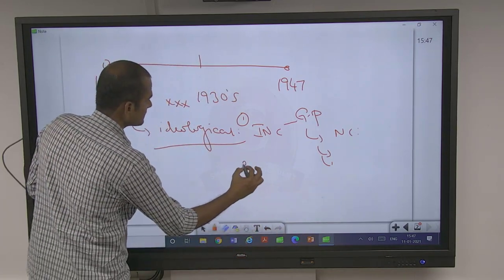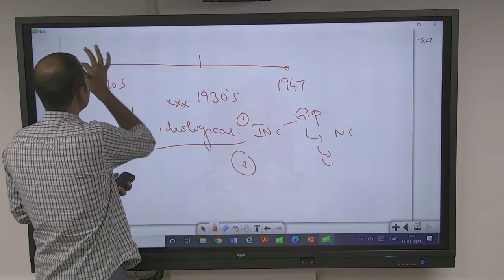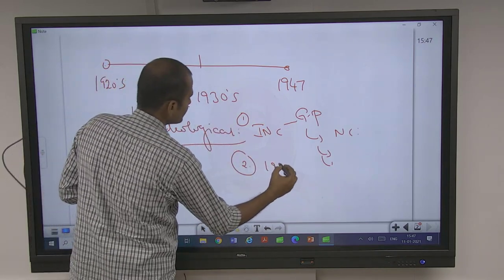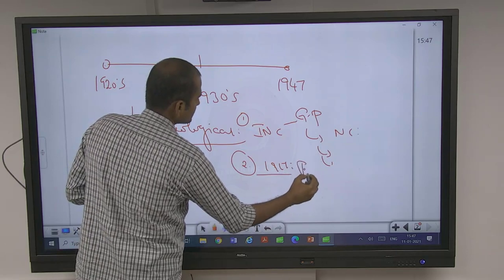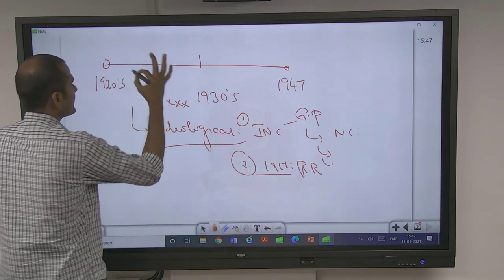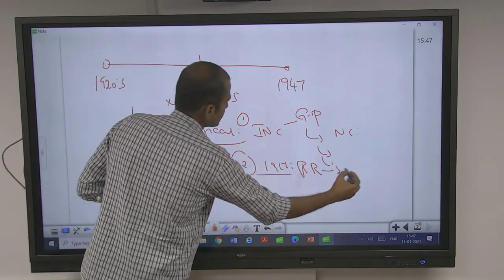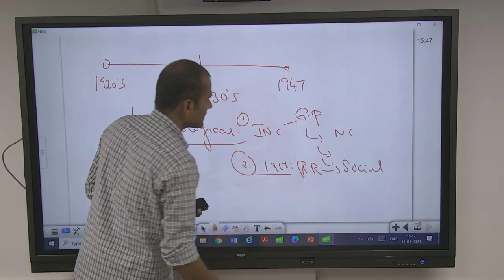And second is, if you see why 1920s - 1917 Russian revolution and the rise of socialist ideas. It's the second idea - socialist ideas.